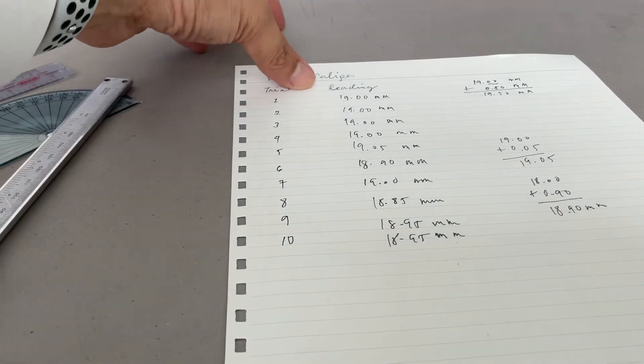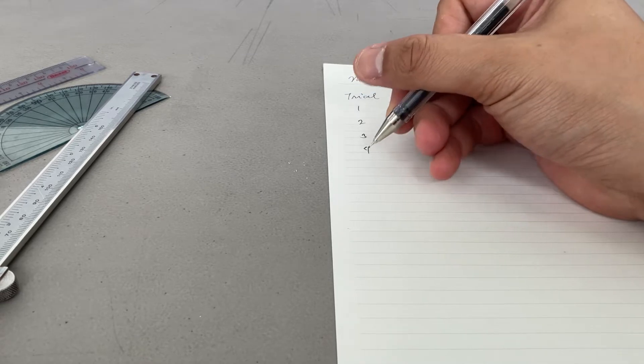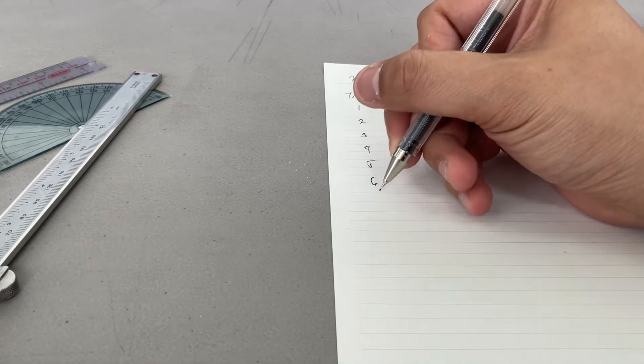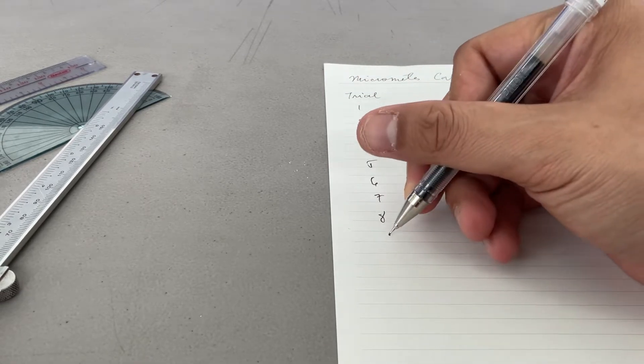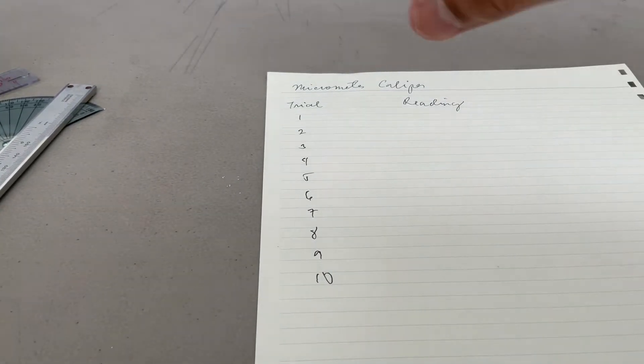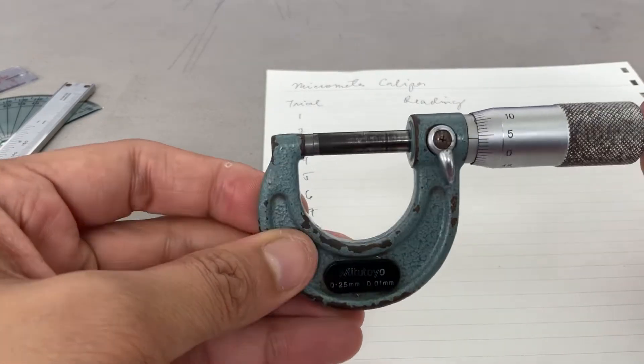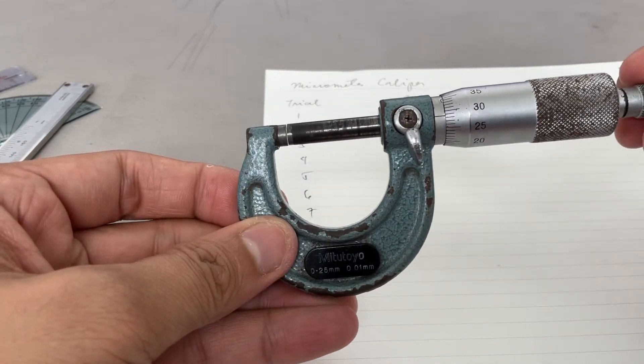So now let's try the micrometer caliper. We can have 10 trials for this. I have here the micrometer caliper. How do we measure with a micrometer caliper if there's no object in between this anvil and spindle?